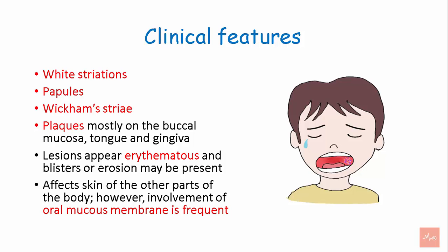It affects the skin of other parts of the body; however, the involvement of oral mucous membrane is frequent. According to the study of Clark and McGrathy, patients with dermal lichen planus have an association with oral lichen planus. The papules are small, angular, measuring few millimetres in diameter, and these may be discreet or can coalesce into large plaques.